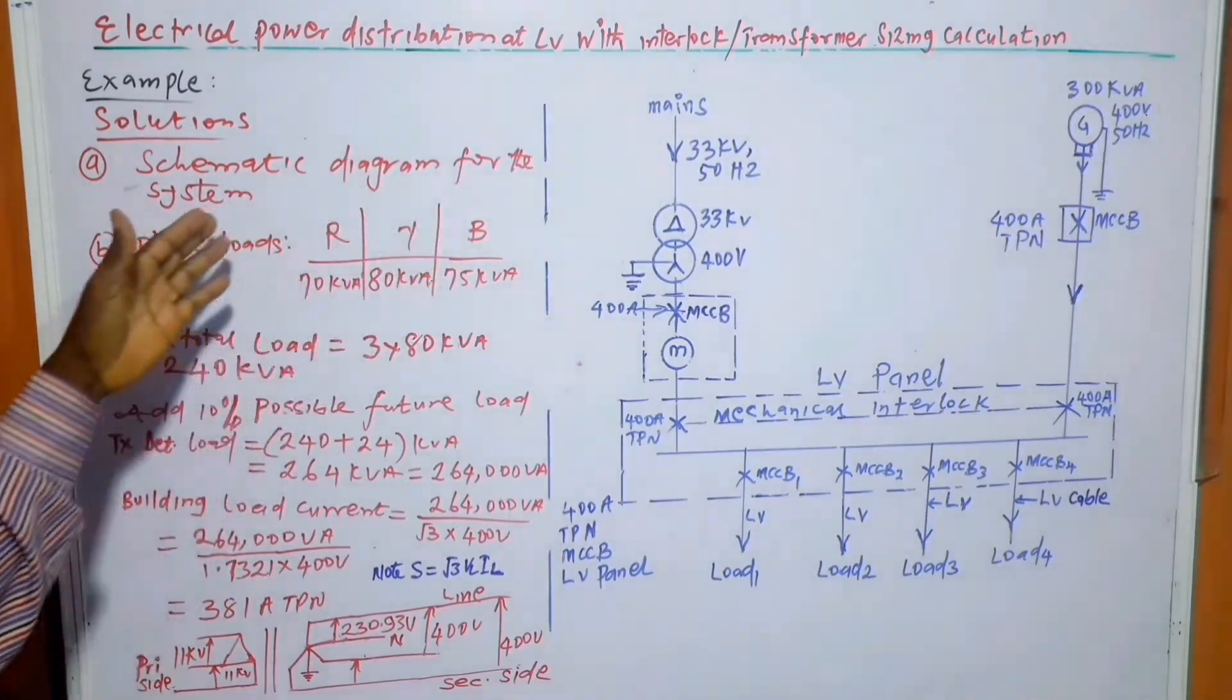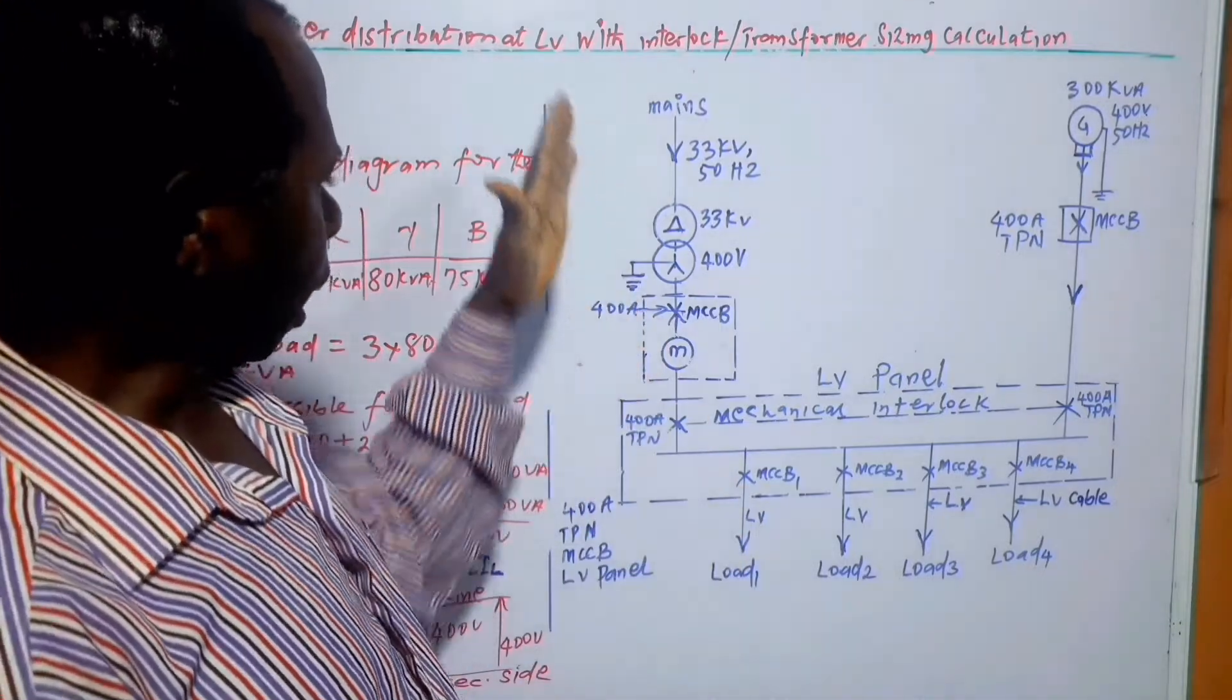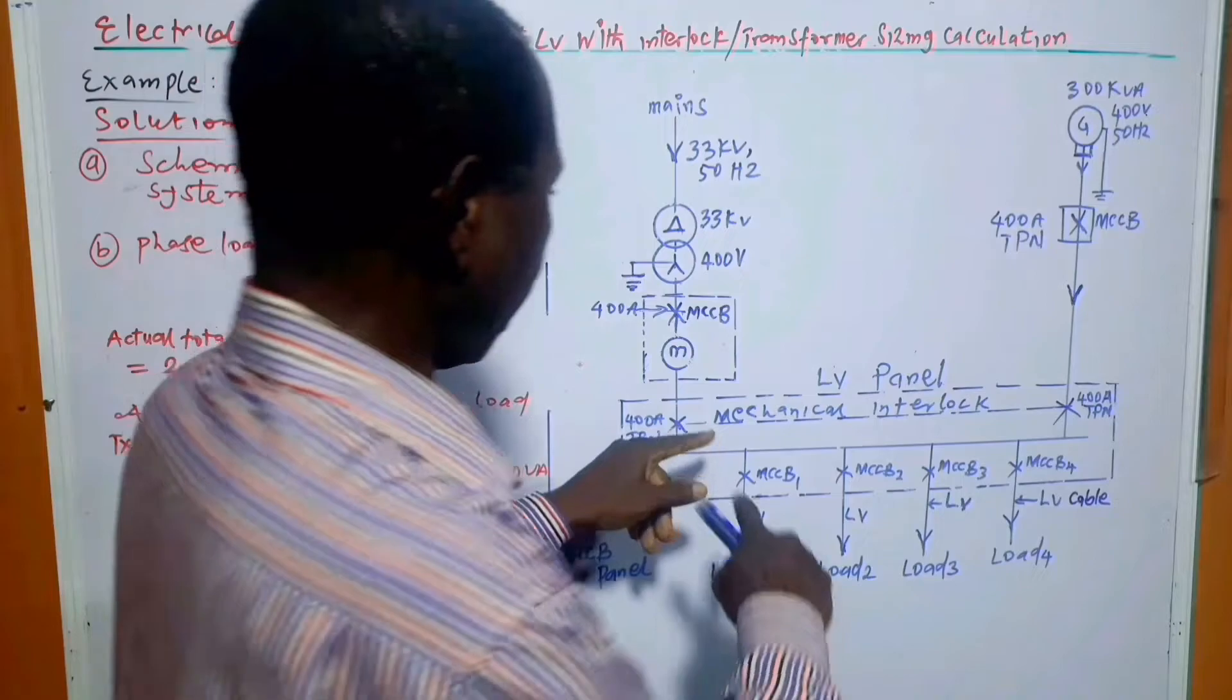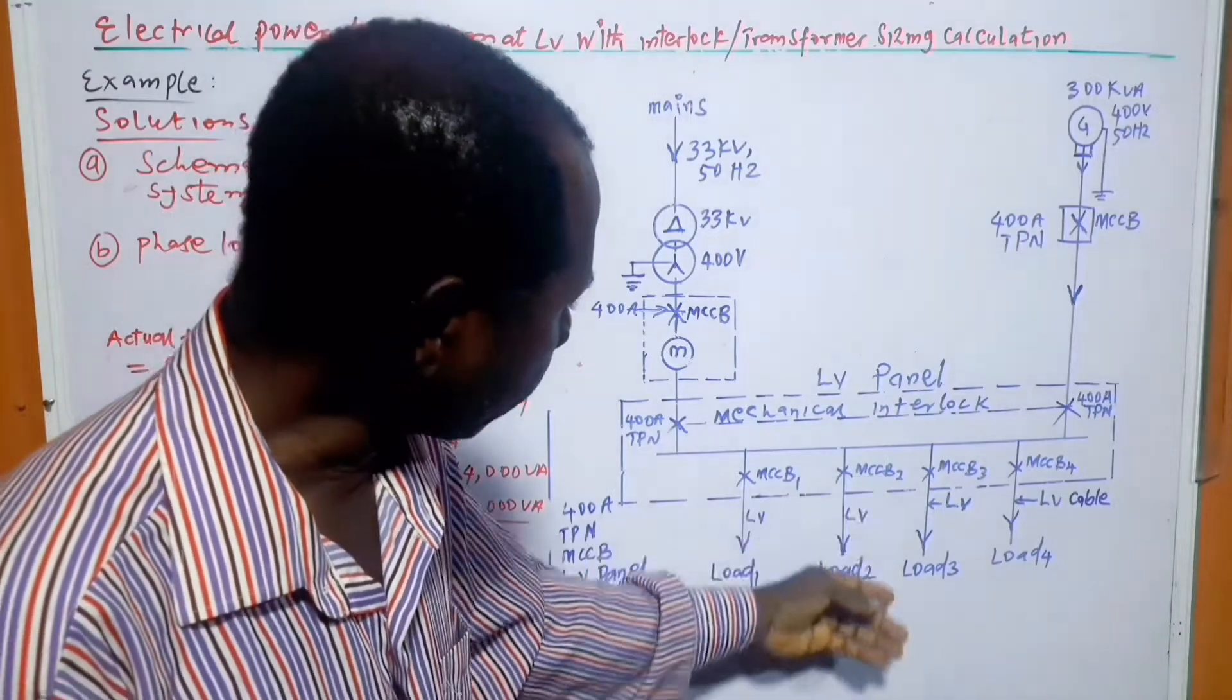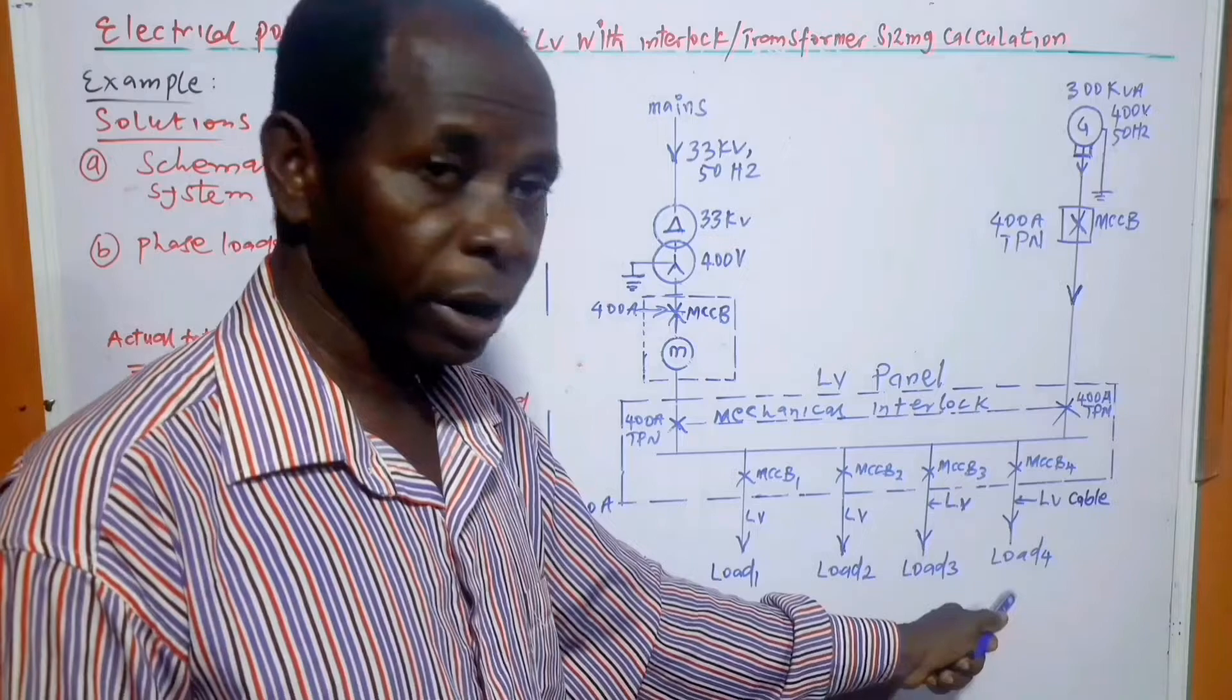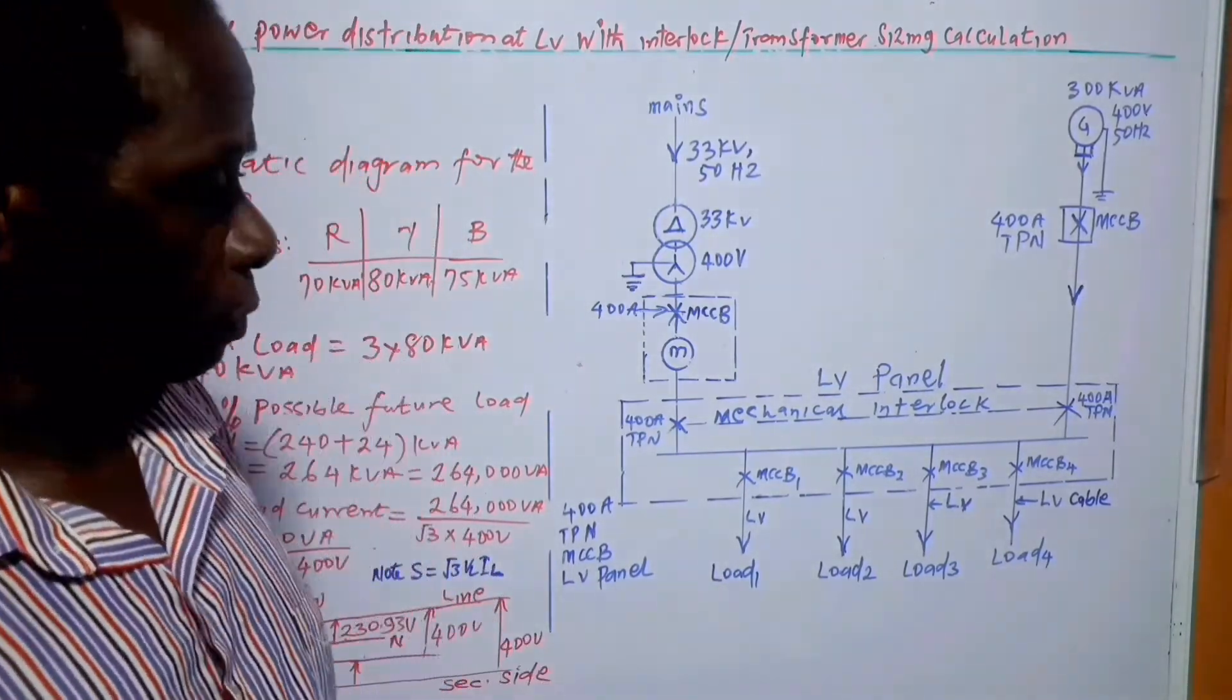Now, solution to the problem. Part A, the schematic diagram for the system. Normally, for a particular electrical power distribution system, there are always three sides. We have the mains side, which is the main voltage supply side, the generator side, and the interlock section as well. And from the interlock section, we have the common bus section, from where we have circuit breakers going to the loads. These loads could be distribution bus or some other kinds of loads.